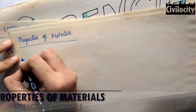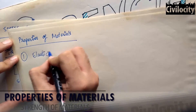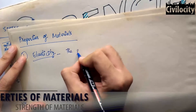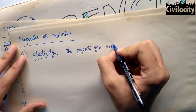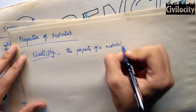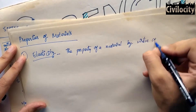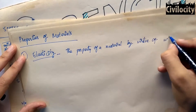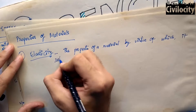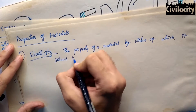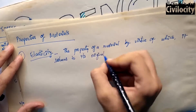We are going to talk about the different properties that materials possess and how differently they behave. Our first topic is elasticity. If I explain in simple words: any material, if we stretch or compress it, there will be deformation. If we remove the load and it comes back to the same position, we call that elasticity. The property of a material by virtue of which it returns to its original dimensions during unloading is called elasticity, and materials that possess this are called elastic materials.